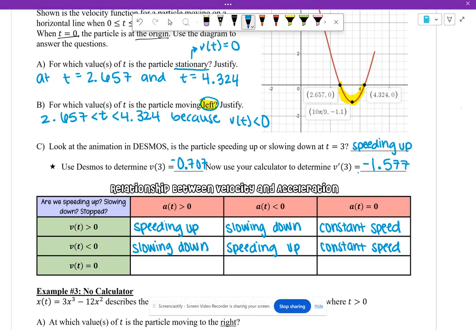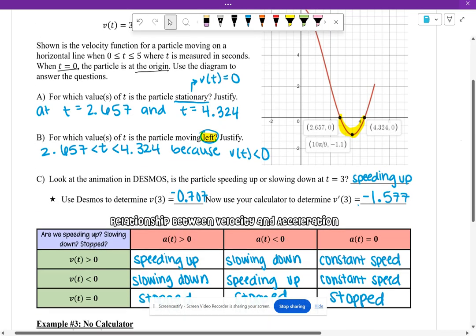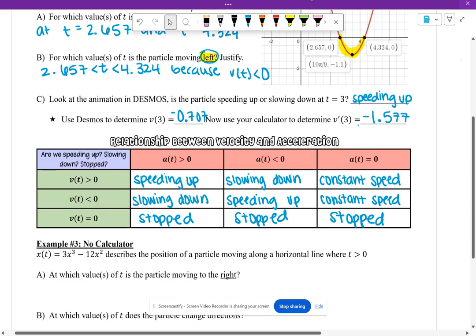Now this whole bottom row, if velocity is zero, that means my object has stopped completely. So anytime velocity is zero, my object has stopped. Thanks for watching. We've got one more video after this. Thanks for sticking with it.